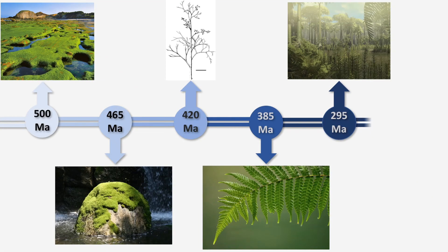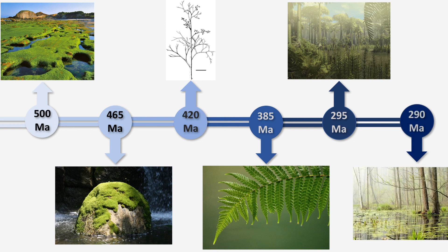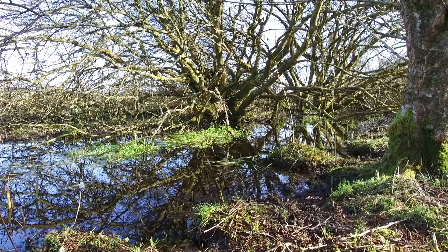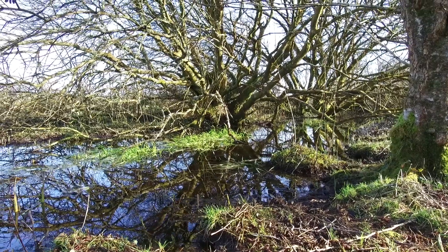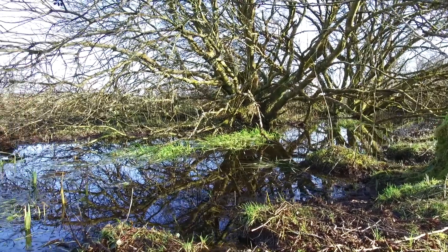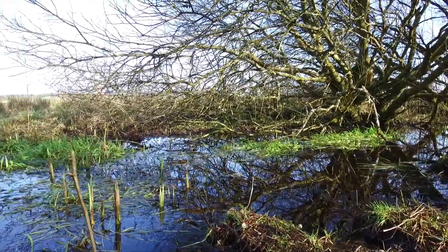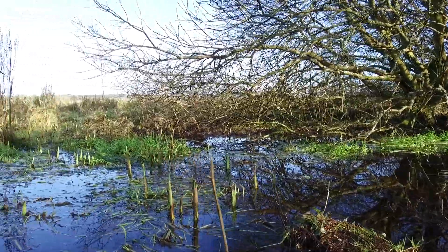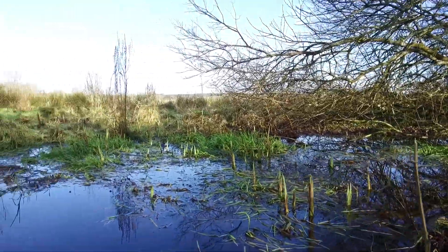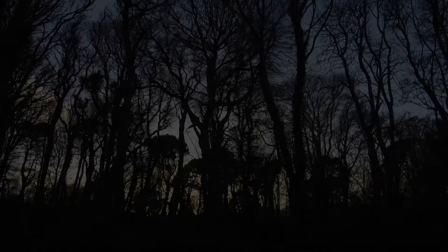During the end of the Carboniferous, large areas of wetland covered the tropical environments. A genus of gymnosperms called cordaites were among the most common trees found within these coal forests. They had long ribbon-like leaves that could reach 75 centimeters in length.